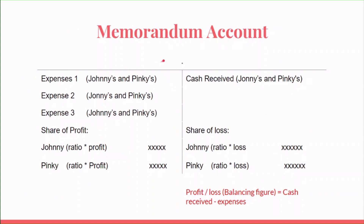Moving ahead, after sharing information, they will both make a memorandum account. This account will calculate the profit from the joint venture. Please note that Johnny cannot calculate the profit from his books alone, and Pinky also cannot calculate the profit from her books alone. They need to share information. Once they share information, they are able to make this account.